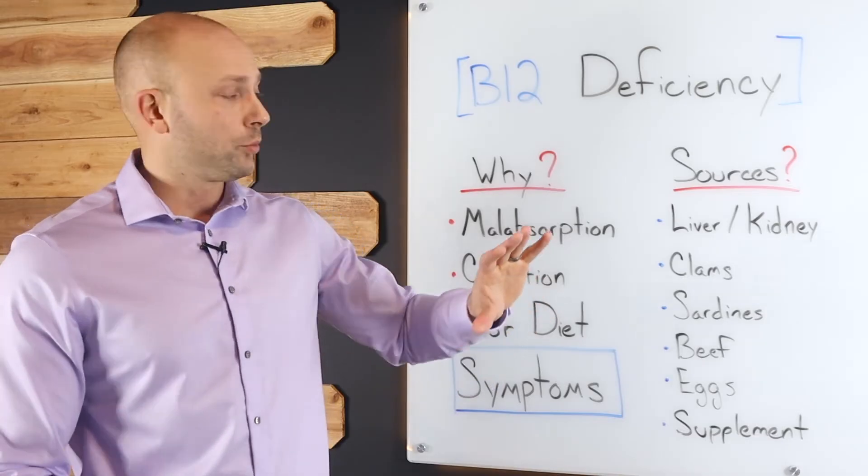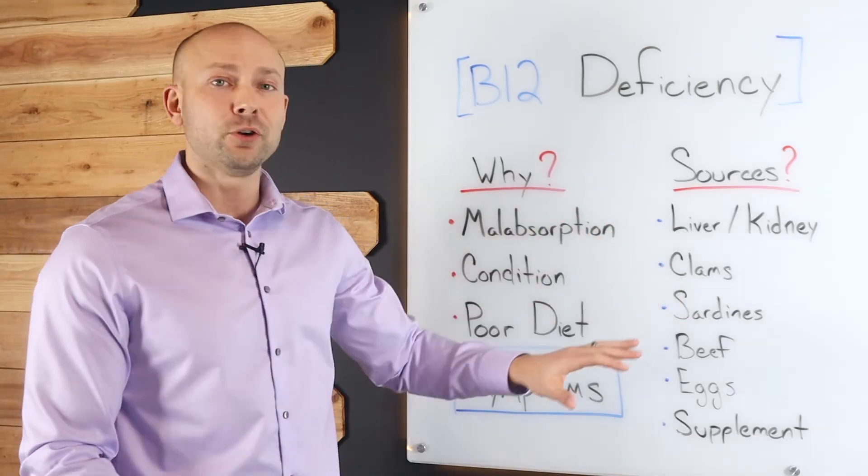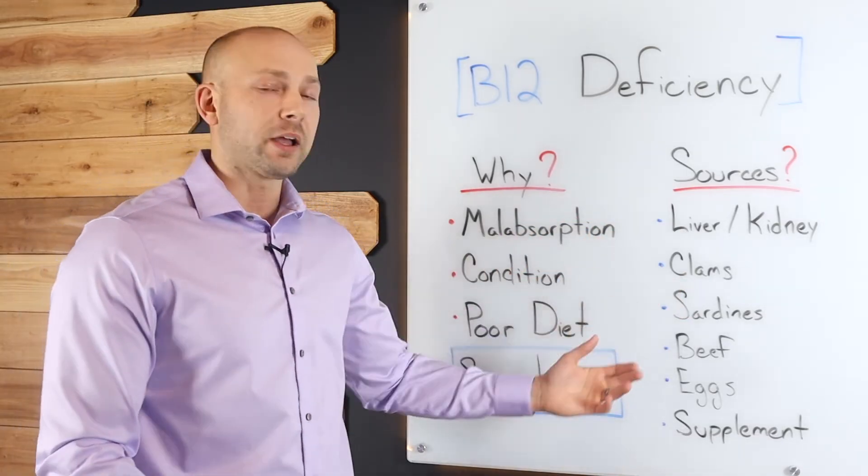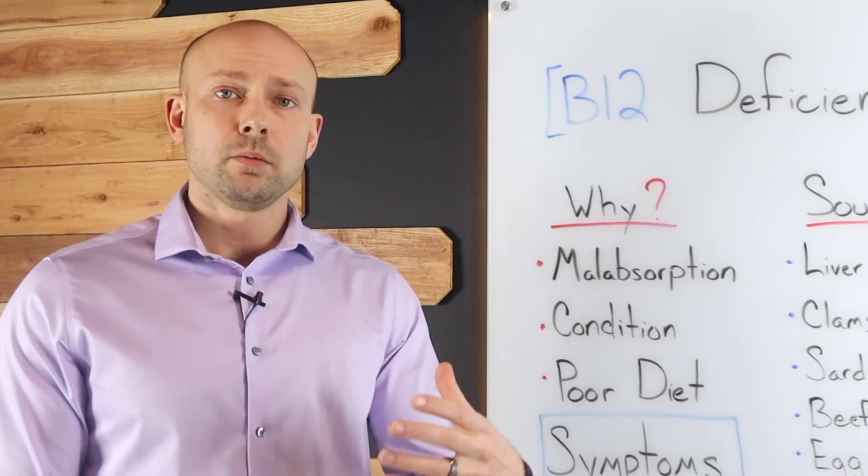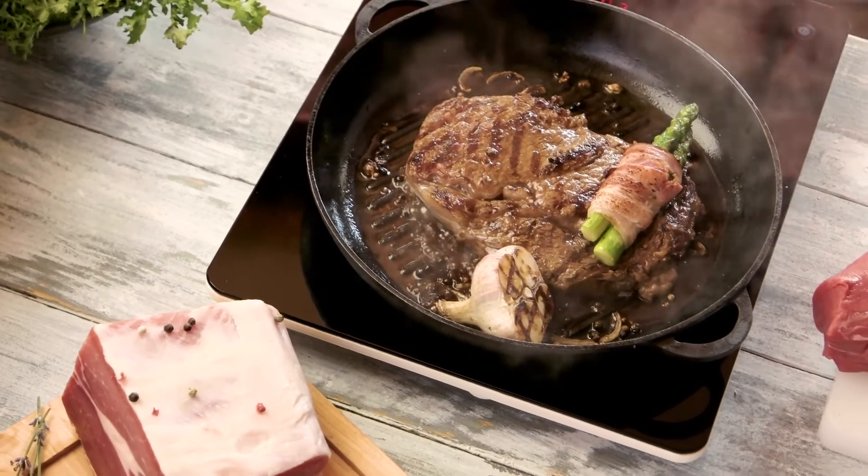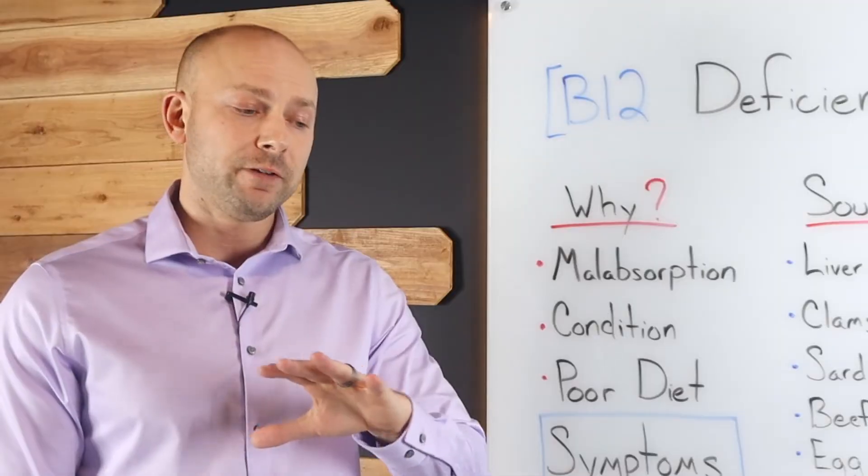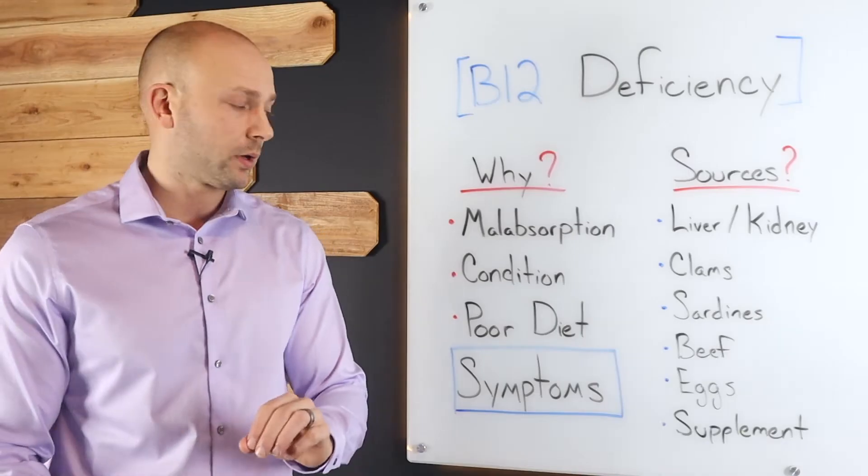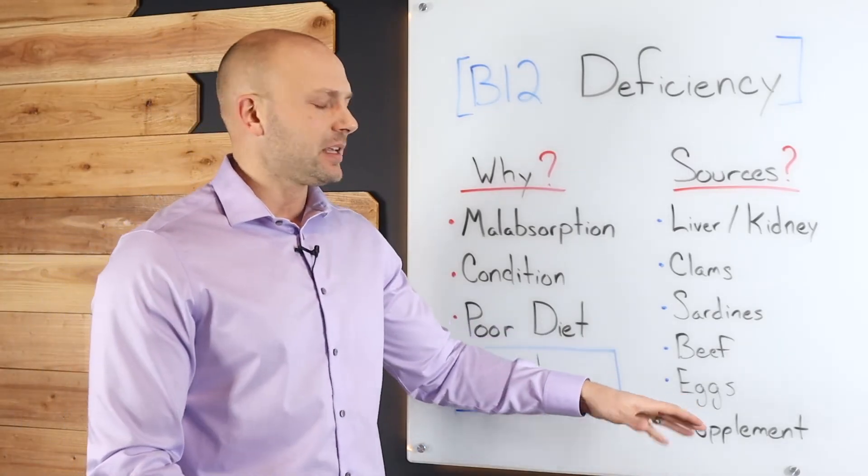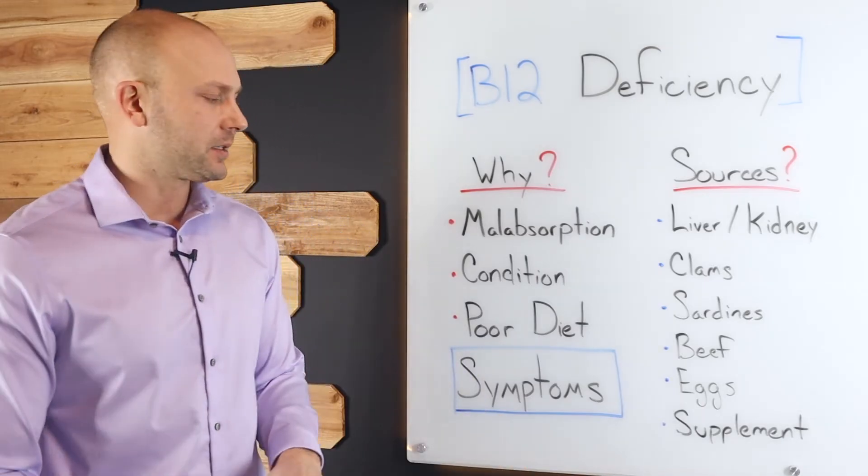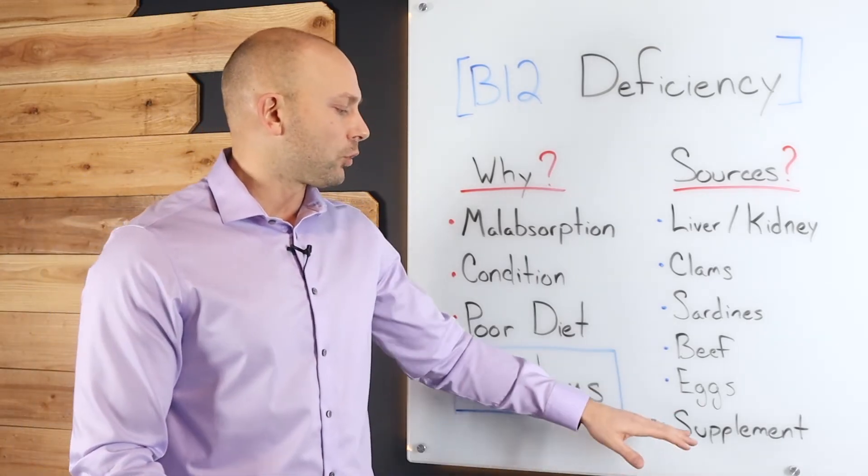If you're not someone who's liking organ meats or seafood, you're stuck with beef. And if you're consuming meat products, beef, steak, that kind of thing, it is a very sufficient way to get B12 for most people. So beef is great. And then eggs is not the greatest source, but it's a source of B12.